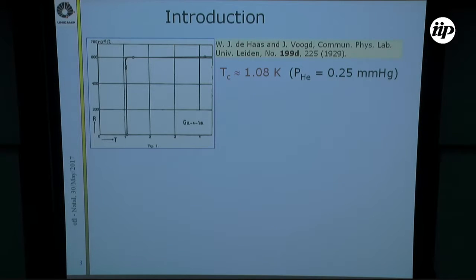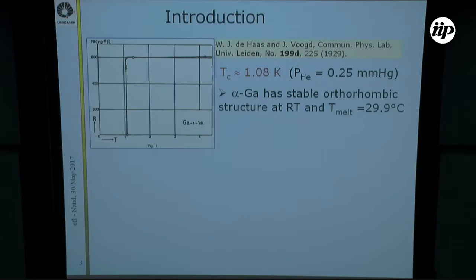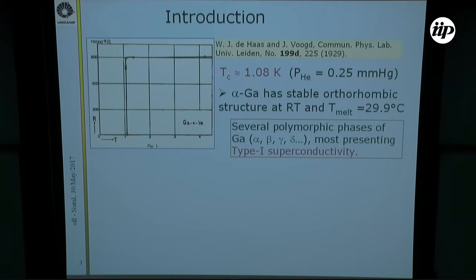Superconductivity in gallium was discovered in 1929 with a Tc around 1 K, and this is the common alpha-gallium with a melting temperature around 30 degrees Celsius. Several polymorphic phases of gallium are already known, and most of those phases present type-1 superconductivity.